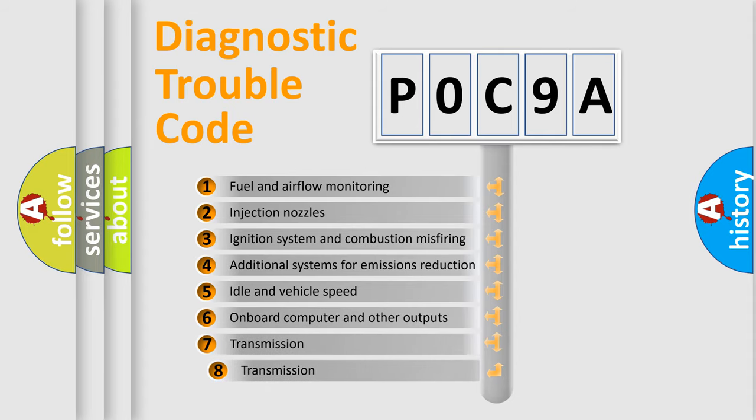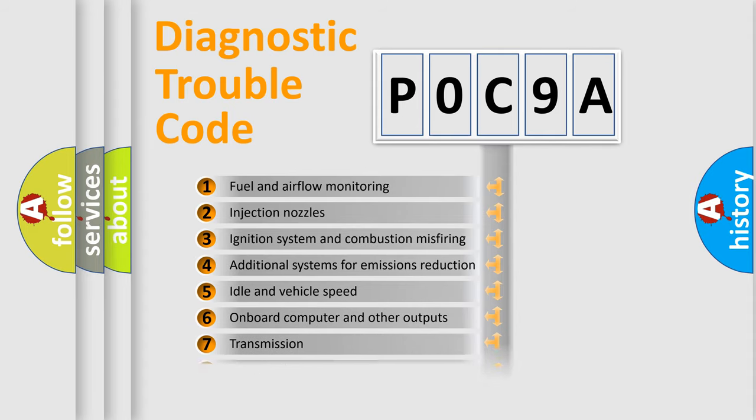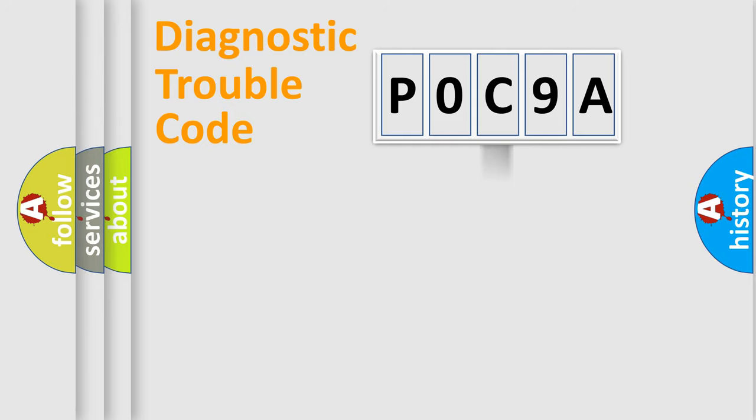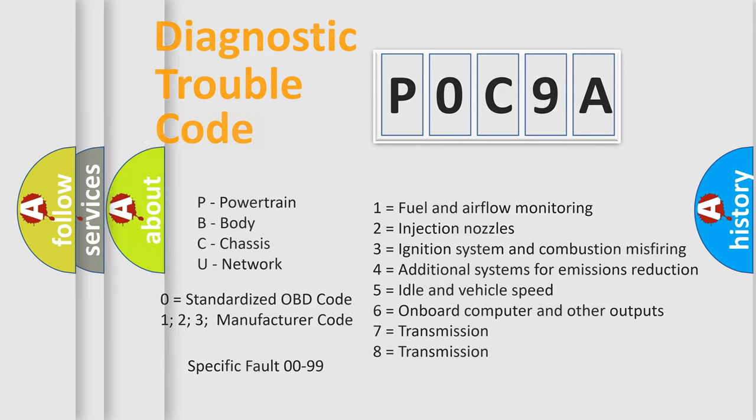The third character specifies a subset of errors. The distribution shown is valid only for the standardized DTC code. Only the last two characters define the specific fault of the group. Let's not forget that such a division is valid only if the second character code is expressed by the number zero.